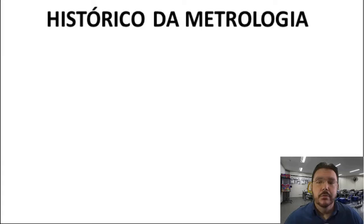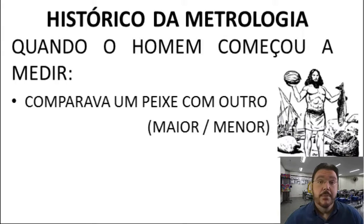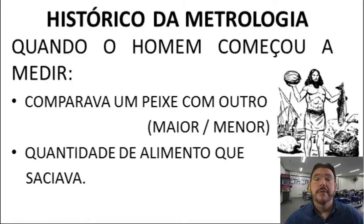Talvez você ache estranho alguns métodos seguidos há muito tempo atrás. Para saber como a metrologia surgiu, como essa ideia de medir as coisas foi evoluindo ao longo dos anos, fazendo um histórico: quando o homem começou a medir, ele comparava um peixe com outro peixe — sabia que um era maior e outro menor. Ele verificava a quantidade de alimento que o saciava. Assim começava a fazer as primeiras medições, mesmo sem sistemas de numeração, mas já com necessidade de medir.